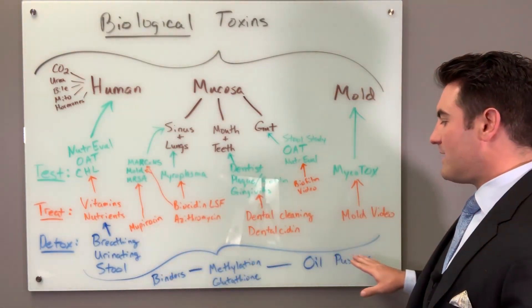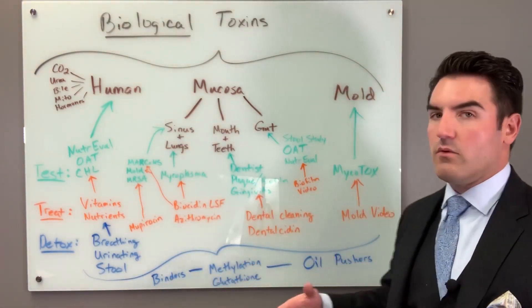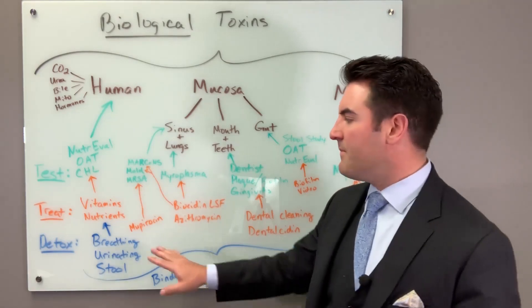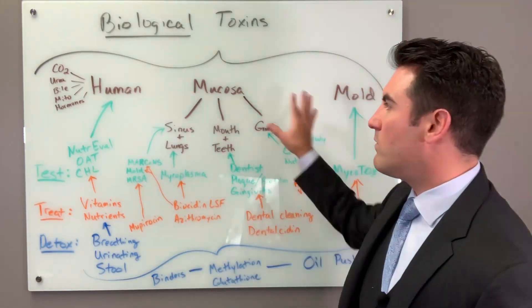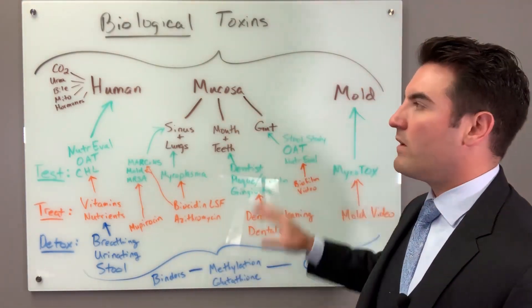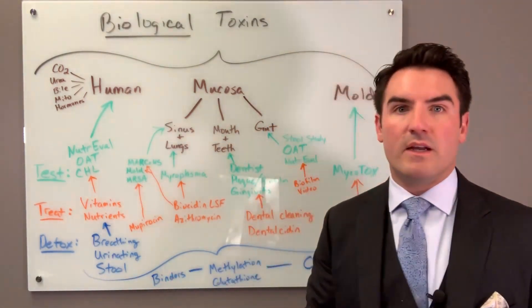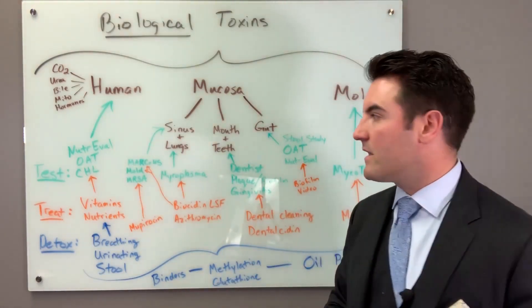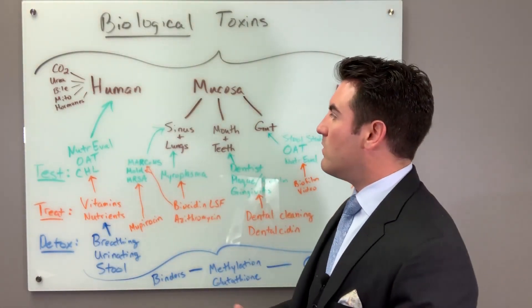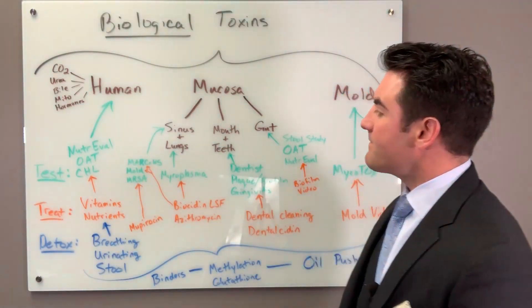These are all components of detoxification for your own human hormones. I've also listed binders, methylation, glutathione, and oil pushers - those are more relevant to the other biological toxins we'll cover, although they are also utilized in human detoxification, and we'll get there.